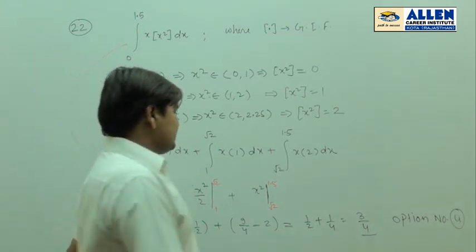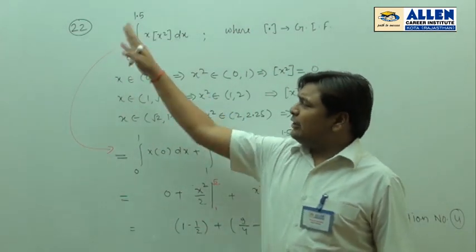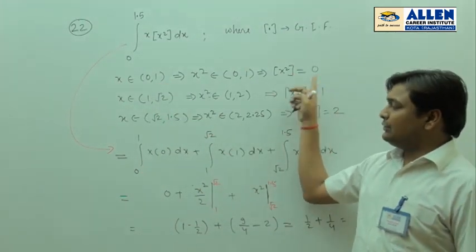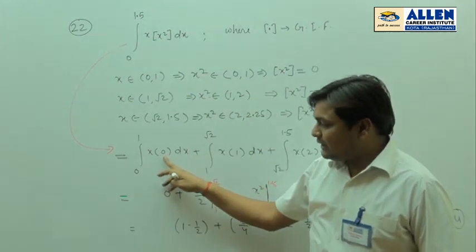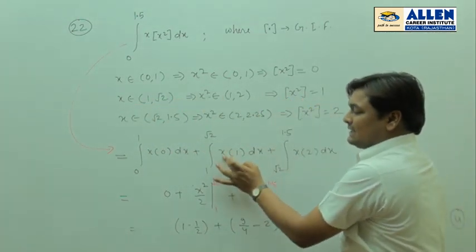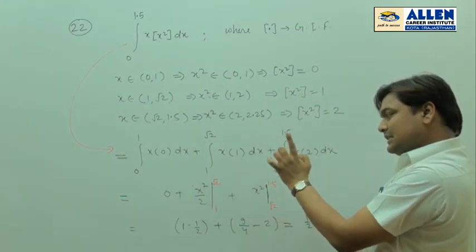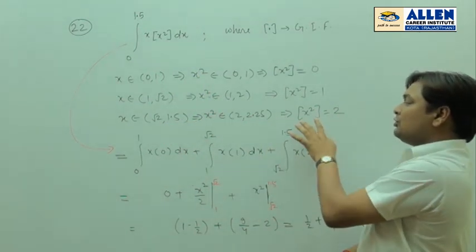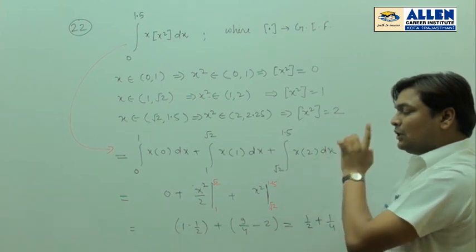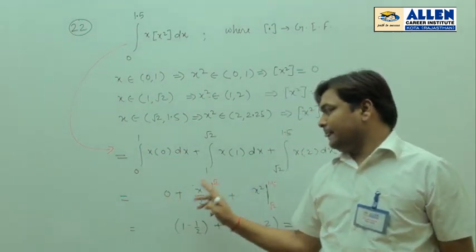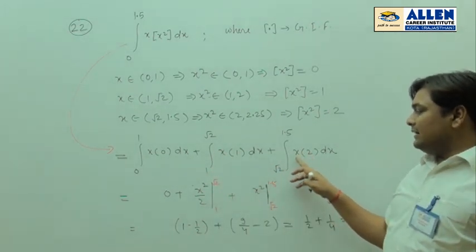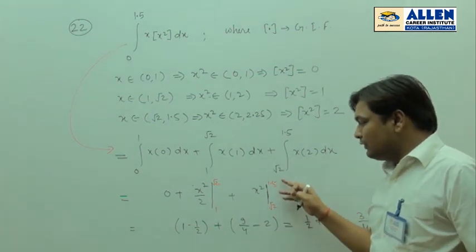We will break this integral over the interval [0, 1.5] into three parts. From 0 to 1, ⌊x²⌋ = 0, so that part is 0. From 1 to √2, ⌊x²⌋ = 1, so we integrate x·1 = x, giving x²/2 evaluated from 1 to √2. From √2 to 1.5, ⌊x²⌋ = 2, so we integrate 2x, giving x² evaluated from √2 to 1.5.